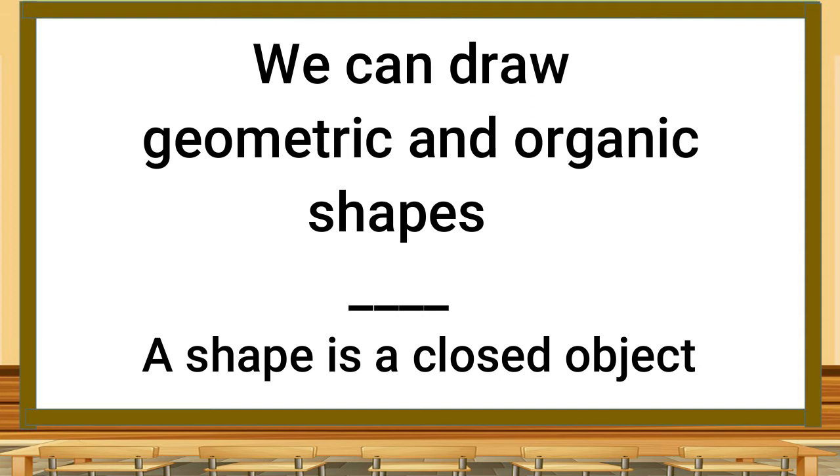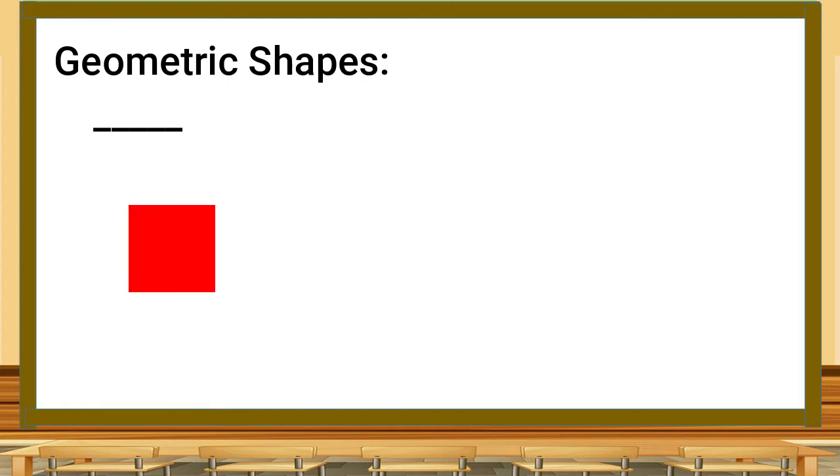Geometric shapes are shapes that have names. They're shapes that we talk about in math a lot. You will recognize these shapes because we've been talking about them since kindergarten. Geometric shapes are shapes like square, circle, triangle, diamond, and heart.